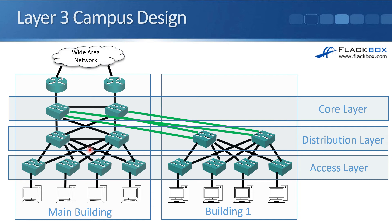If you put layer 3 switches everywhere including in the access layer, you have layer 3 links from the access layer to the distribution layer, meaning you have an IP address on each port. Because everything is layer 3, spanning tree is no longer running — spanning tree only works on layer 2 links. Path determination is now handled by your routing protocol instead of spanning tree.